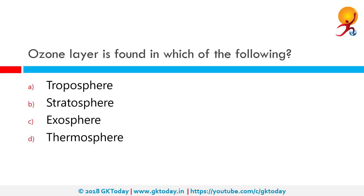The ozone layer is found in which of the following? The correct answer is Stratosphere. The ozone layer is a region of Earth's stratosphere that absorbs most of the sun's ultraviolet radiation that may cause skin cancer. It contains a high concentration of ozone in relation to other parts of the atmosphere. Stratospheric ozone is not harmful, but its presence at ground level is harmful.